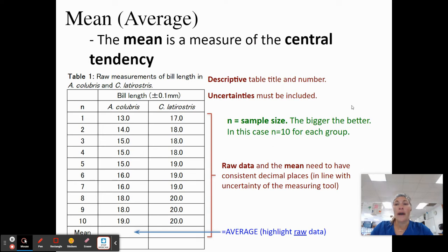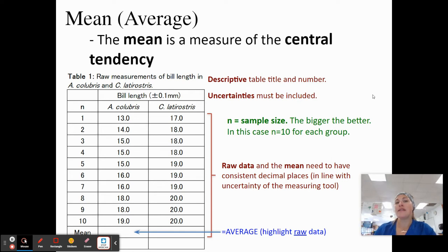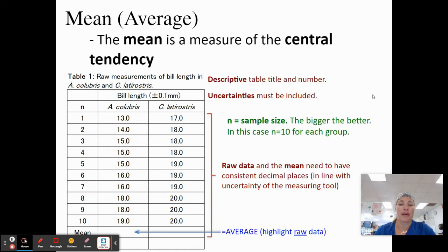When we are doing means and averages, we are going to have a little bit of uncertainty. The mean or average is the measure of central tendency. N, that letter, is always going to stand for sample size throughout all of biology. The bigger our N number is, the more certain we can actually be of our measurements. Here in this chart, that is our raw data.